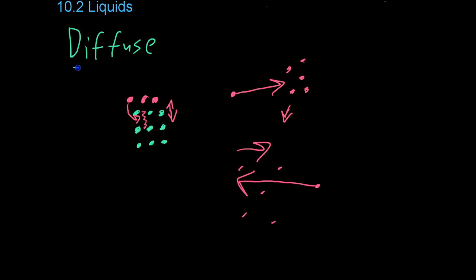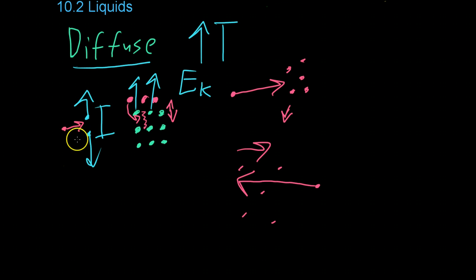One way to make diffusion occur faster in liquids is to increase the temperature. This is because as the temperature increases, things start moving faster. That is, they have more kinetic energy. So these gaps that form when two different molecules bounce off each other will form more often.